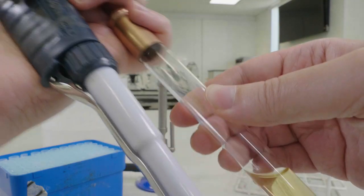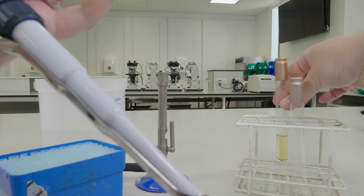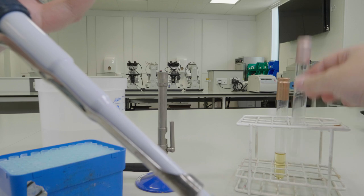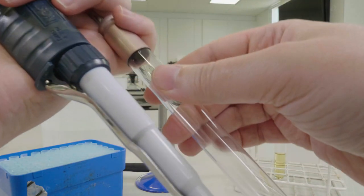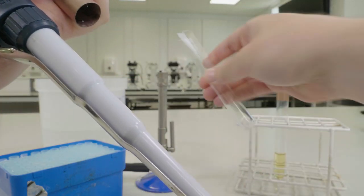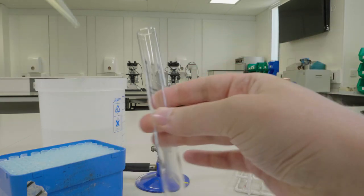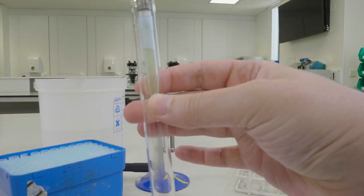Flame your tube, put the lid back on and place it back in the rack. Next take your empty sterile test tube, remove the lid using your little finger of your dominant hand, flame the neck and dispense the liquid into this tube.